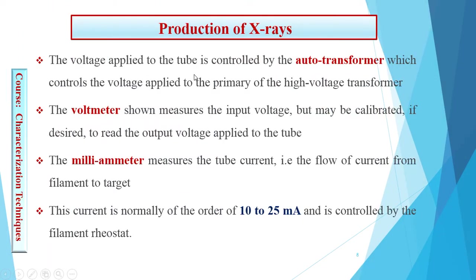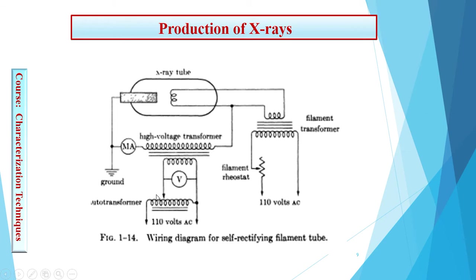The voltage applied to the tube is controlled by the autotransformer, which controls the voltage applied to the primary of the high voltage transformer. A voltmeter measures the input voltage and can be calibrated to read the output voltage applied to the tube. A milliammeter measures the tube current — the flow of current from the filament to the target. This current is controlled by the filament rheostat. A step-down transformer supplying about 5 to 10 volts is used across the filament.